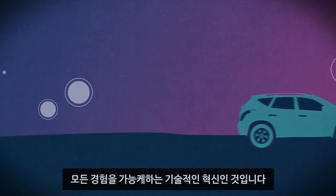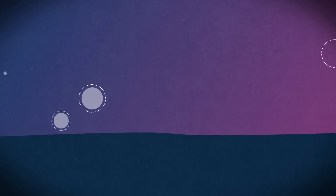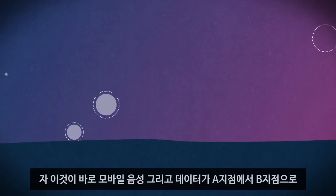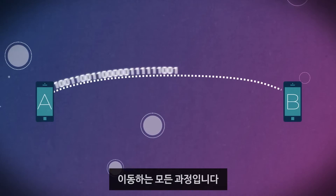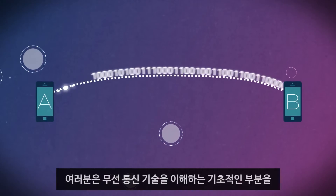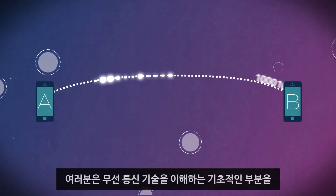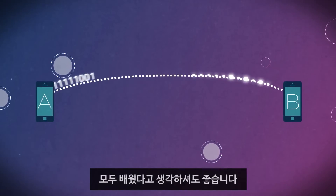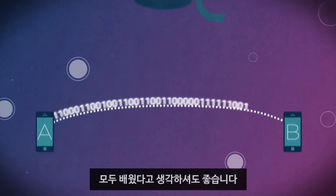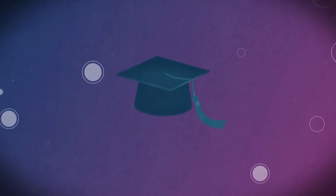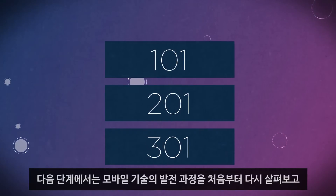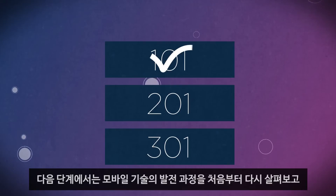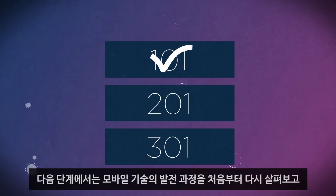So that's how mobile voice and data travel from point A to point B, and now you know everything you need to know about what goes into mobile communications. This concludes the first level in our mobile technology learning course, and you now know all the basics of mobile communications.